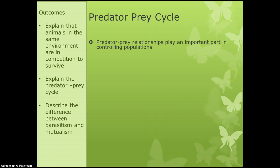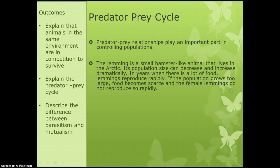There is a cycle and it's really important because it controls the population to make sure we don't ever end up with too many of one type of animal.